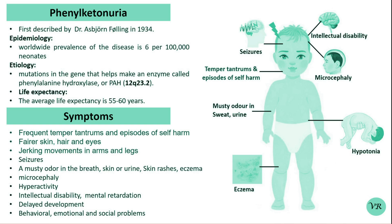Phenylketonuria is inherited in an autosomal recessive pattern. It can be diagnosed typically by blood test, urine test, and genetic testing.